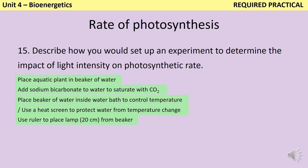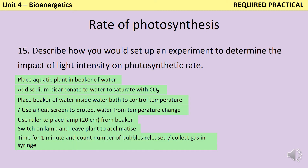Now you switch on the lamp, but you're not going to start taking readings right away because it's going to take a little while for the plant to acclimatise to the amount of light. So you maybe want to leave it for a minute or five minutes until it's settled. Then you're going to time for one minute and count the number of bubbles that are released in that time. Or if you're lucky enough to have a gas syringe, you could collect the gas that's being released instead.